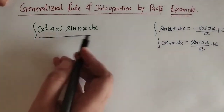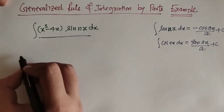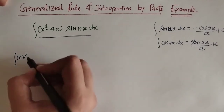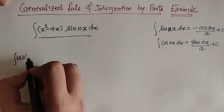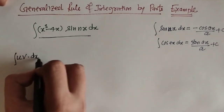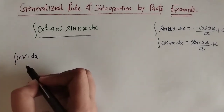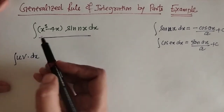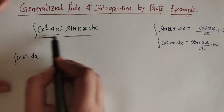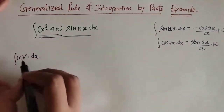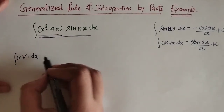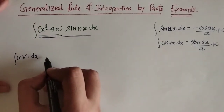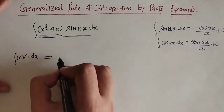Now we have to evaluate this integral. First we will write what is the generalized rule of integration by parts. We use this rule when the first function is a power function of x, that means the first function is a polynomial of x.